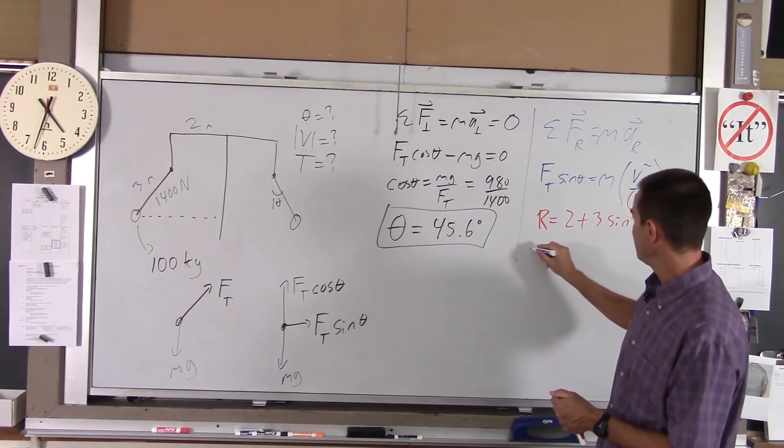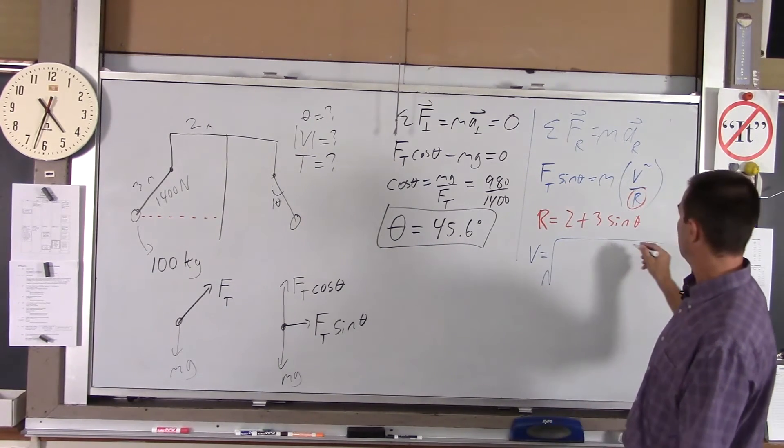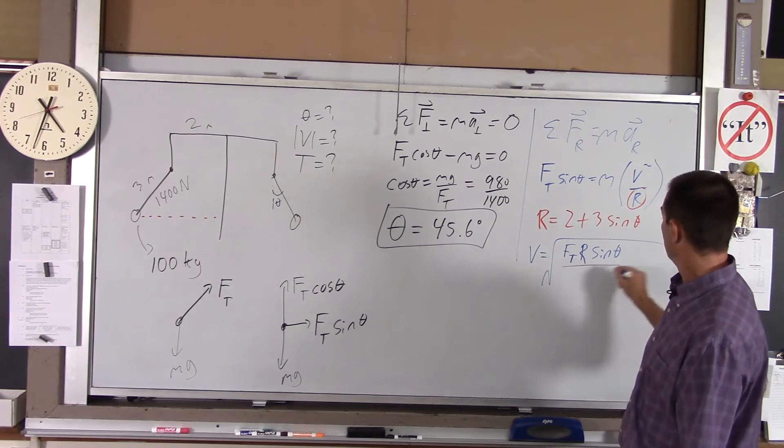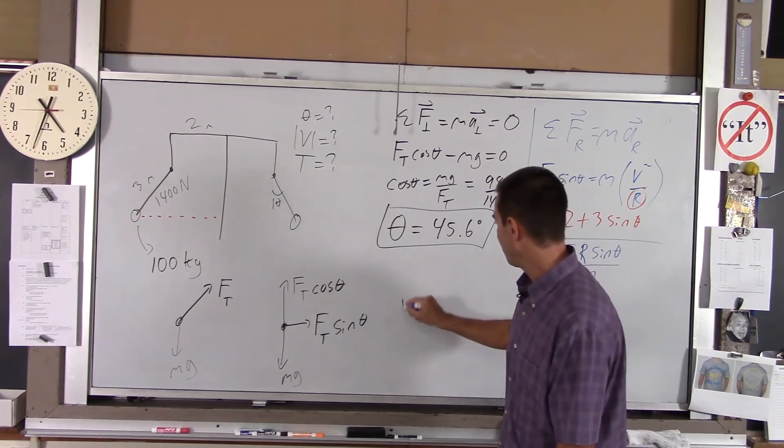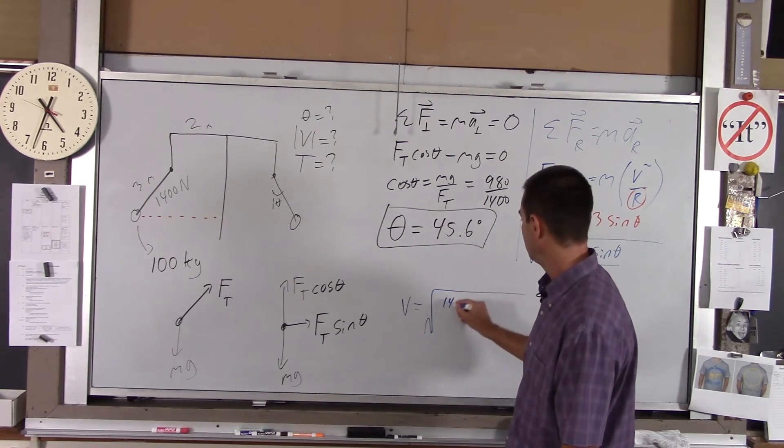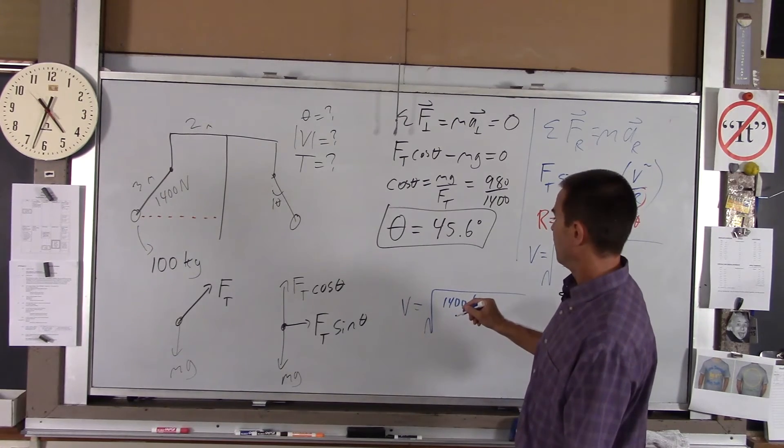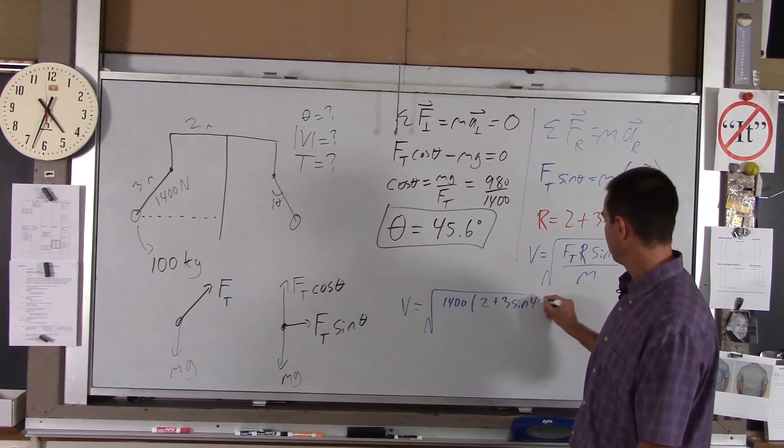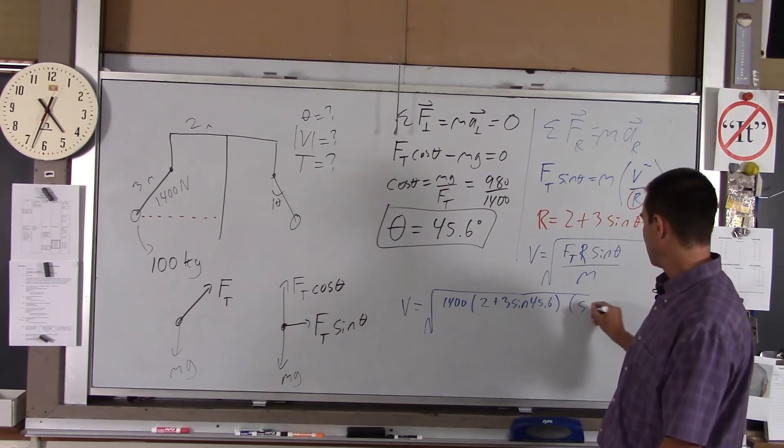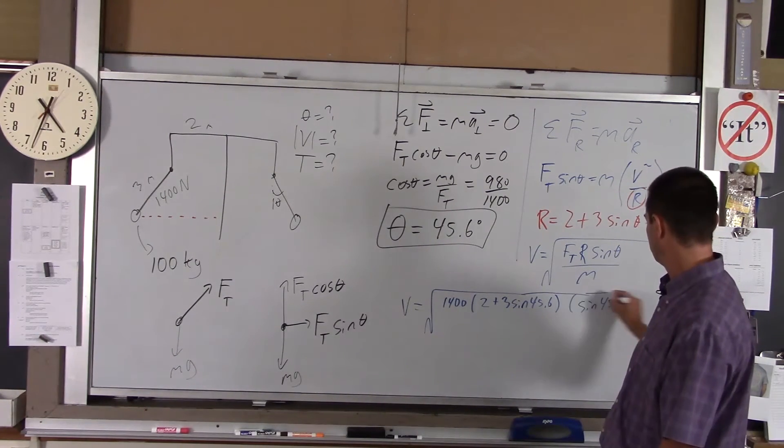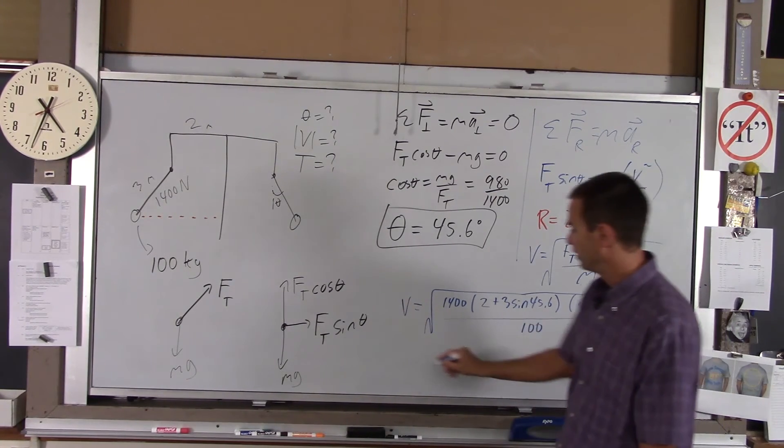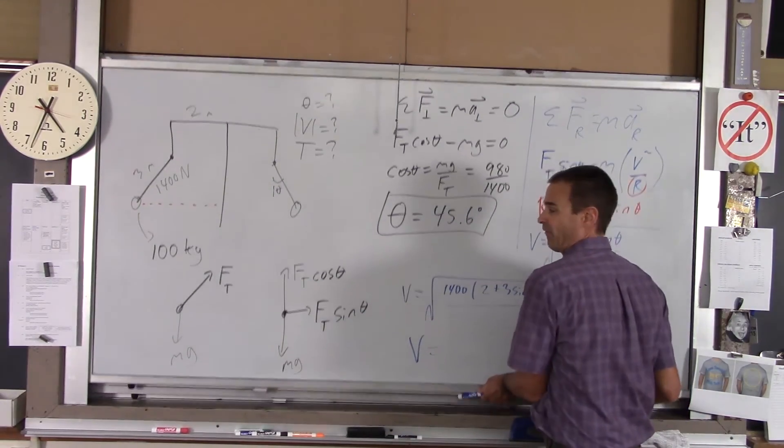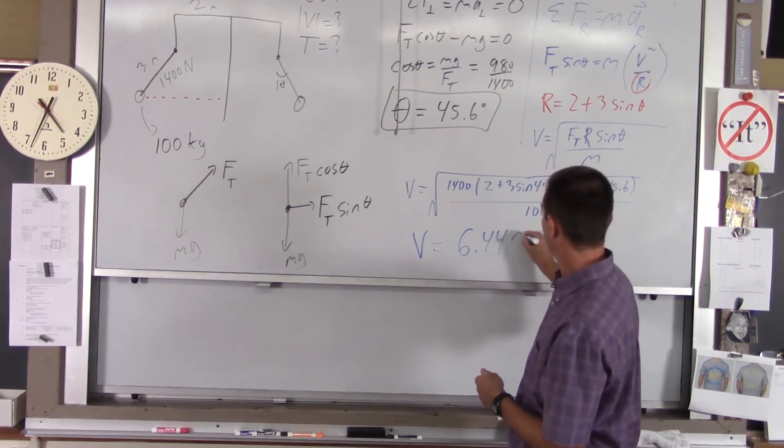So if you do a little algebra here, V will be the square root of Ft times R sine of theta over M. So if I plug all my values in, then velocity is root. Ft is 1400. R is 2 plus 3 sine of 45.6. And then times sine of 45.6. All over the mass of the person and seat, which is 100. You get a velocity. That velocity you end up with would be 6.44. So 6.44 meters per second.